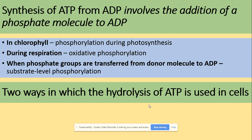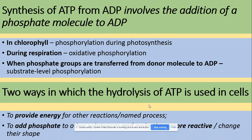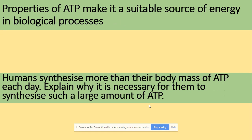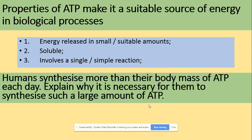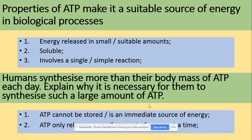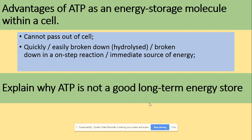Two ways in which hydrolysis of ATP is used in cells: to provide energy for reactions — name specific processes — or to add phosphate to make substrates more reactive, i.e. phosphorylation. Properties of ATP that make it a good source of energy include that energy is released in small amounts, it is soluble, and involves a single reaction. Humans synthesize more than their body mass of ATP each day because you cannot store it and ATP releases only small amounts of energy at a time. Advantages of ATP as an energy storage molecule within a cell include that it cannot pass out of the cell, is quickly hydrolyzed, and is stored in small amounts.